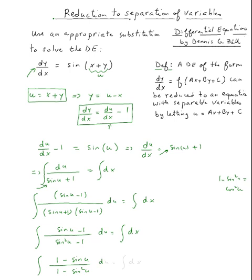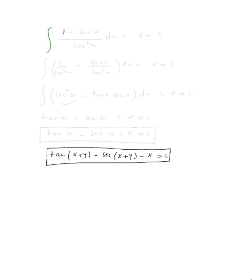So let's do this here. So the top is one minus sine u, but the bottom is cosine squared of u, du. Well, let's do the integral of the right side, because it's easy. It's x plus some c.